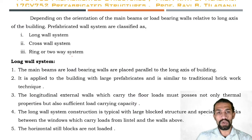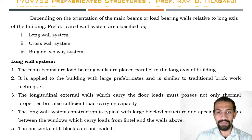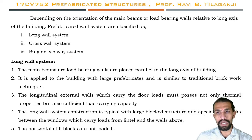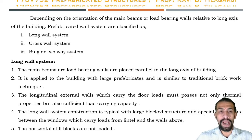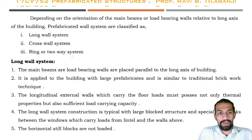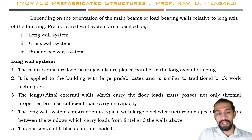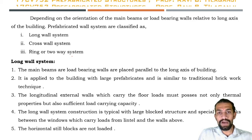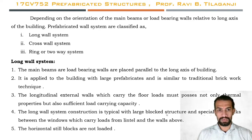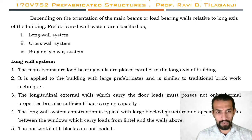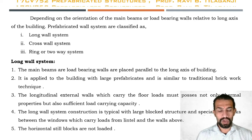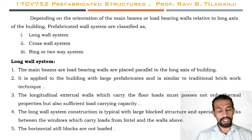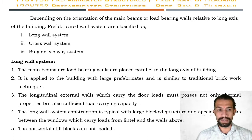Depending on the orientation of main beams or load bearing walls relative to the long axis of the building, prefabricated wall systems are classified as: long wall system, cross wall system, and ring or two-way system.